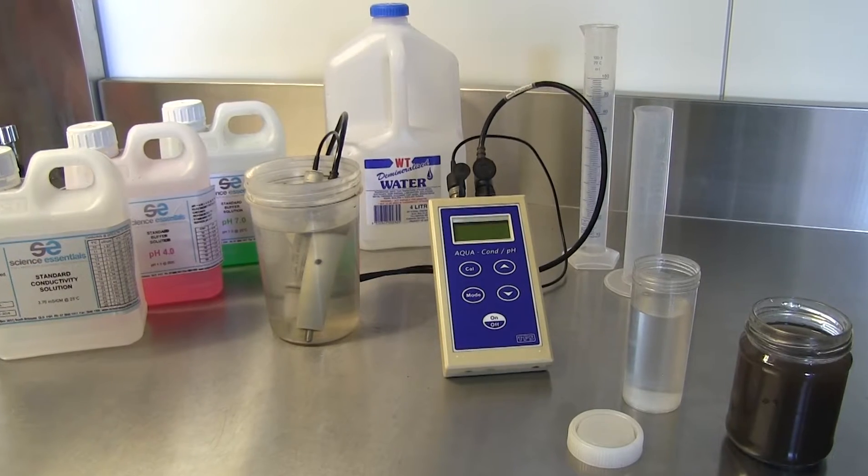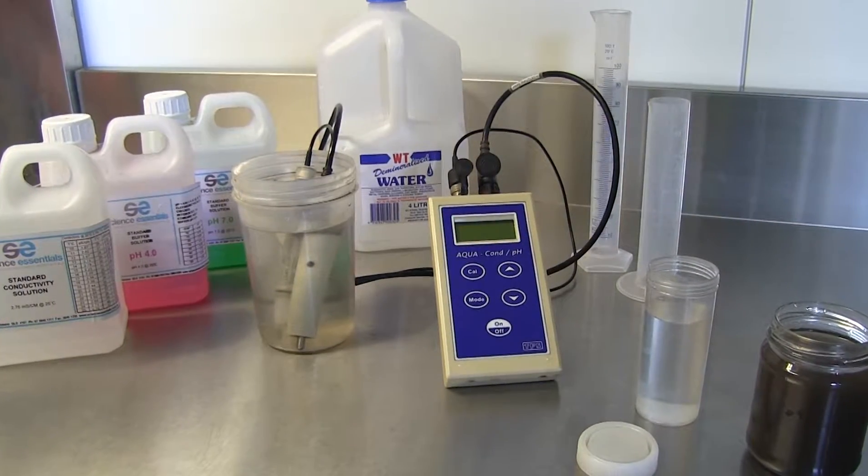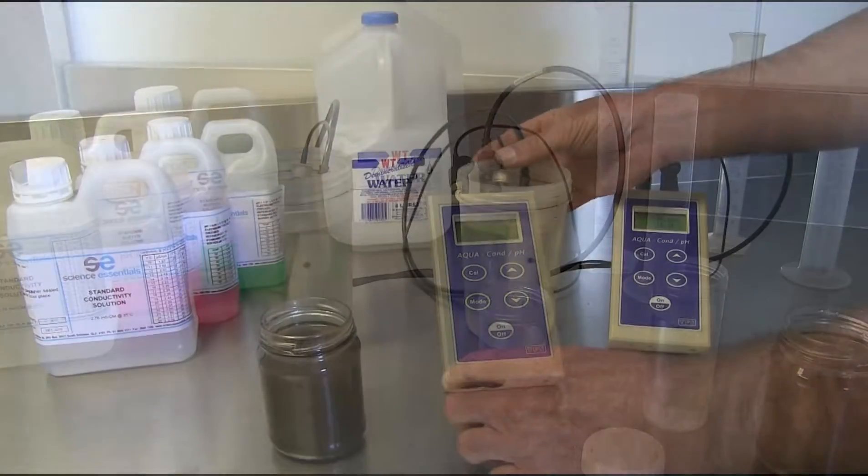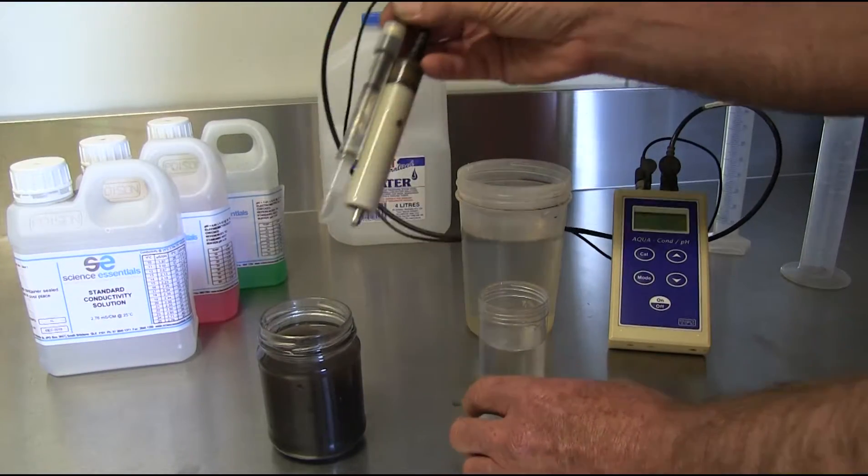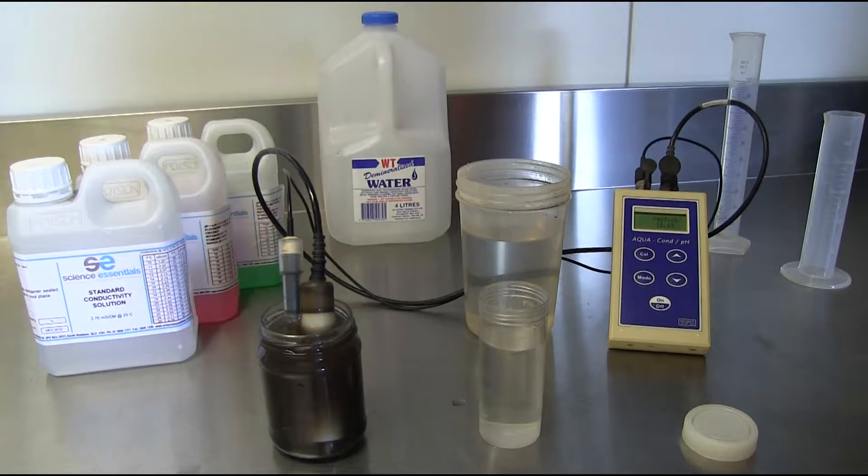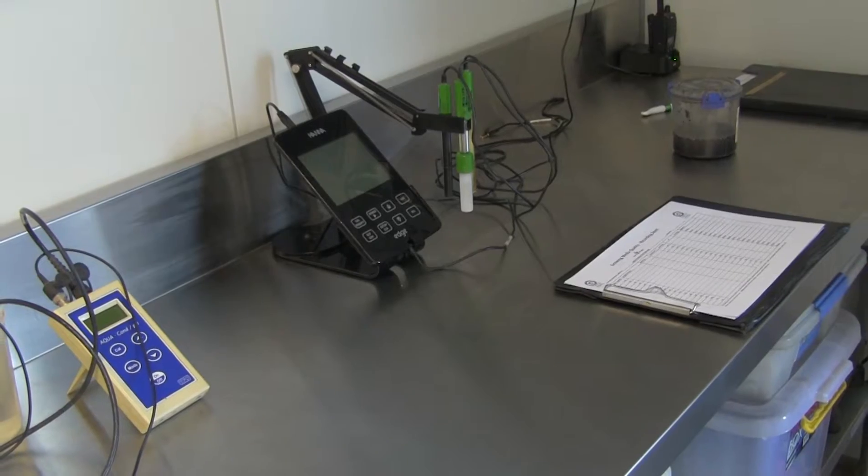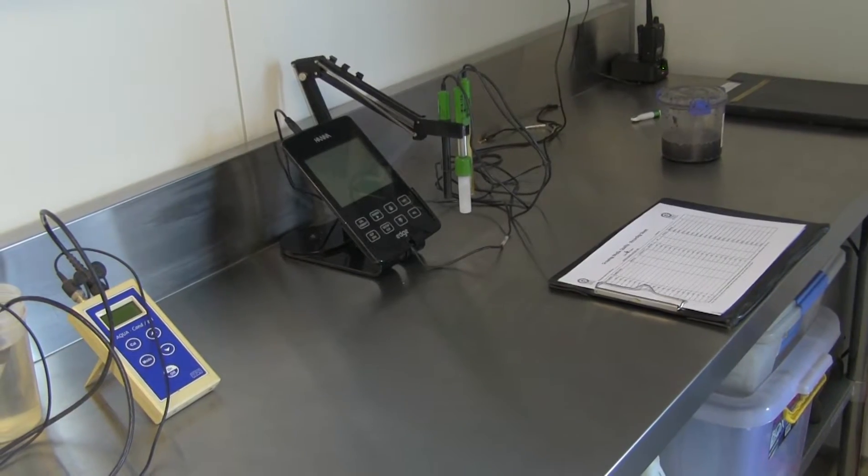To give the greatest accuracy, meters need to be calibrated regularly, with either the interval since the last calibration or the number of tests completed being used to determine how often. Ideally it is best to calibrate your meter before each sampling session. Alternatively, the following can be used as a guide as to how often to calibrate.